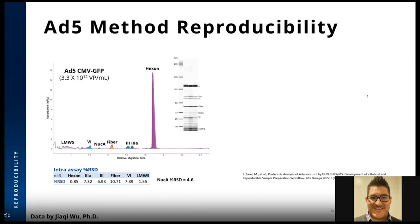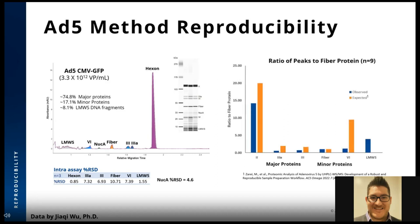We observed excellent repeat injection data with a hexon protein RSD below 1% and all RSDs under 11%. We estimated major and minor protein groups as well as individual levels. The major proteins accounted for nearly 75% of the signal, slightly higher than expected, and minor proteins accounted for 17%, with the remaining 8% for the low molecular weight species generated by DNA genome digestion. A capsid protein ratio analysis sets the fiber protein to 1 as an example test for batch-to-batch consistency of adenovirus.